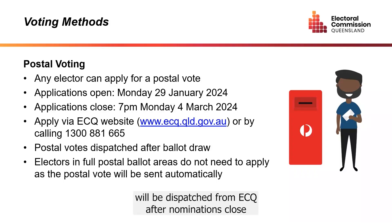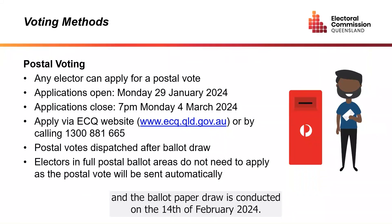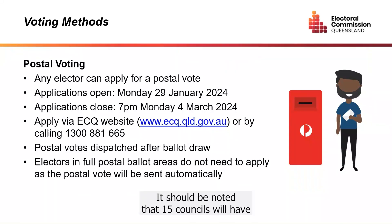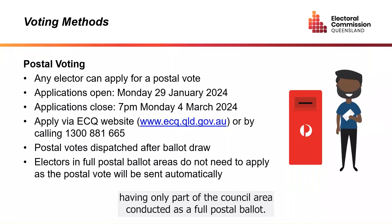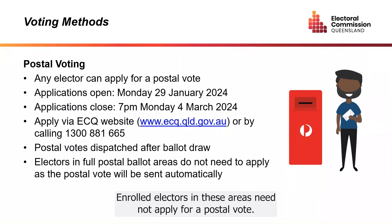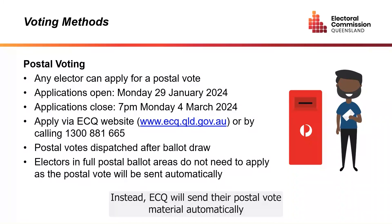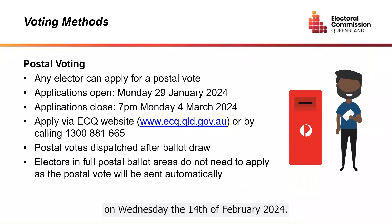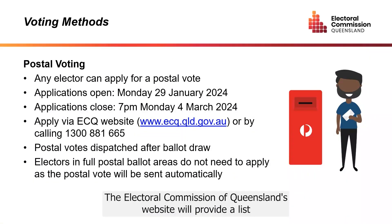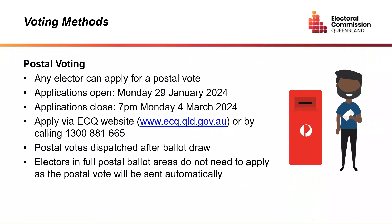Postal votes will be dispatched from ECQ after nominations close and the ballot paper draw is conducted on 14 February 2024. It should be noted that 15 councils will have their election conducted as a full postal ballot, with two further councils having only part of the council area conducted as a full postal ballot. Enrolled electors in these areas need not apply for a postal vote. Instead, ECQ will send their postal vote material automatically once nominations close and the ballot draw is conducted on Wednesday 14 February 2024. The Electoral Commission of Queensland's website will provide a list of the affected councils.